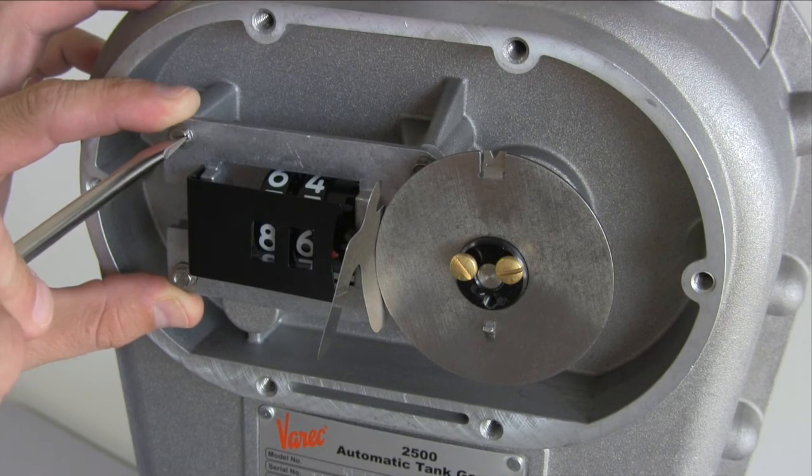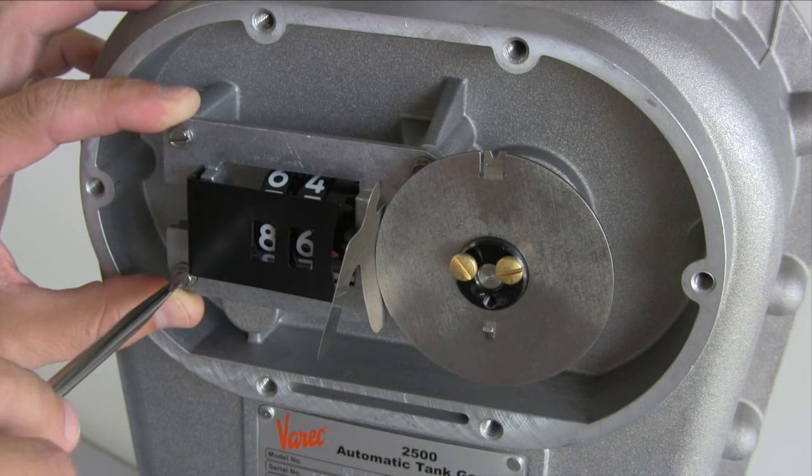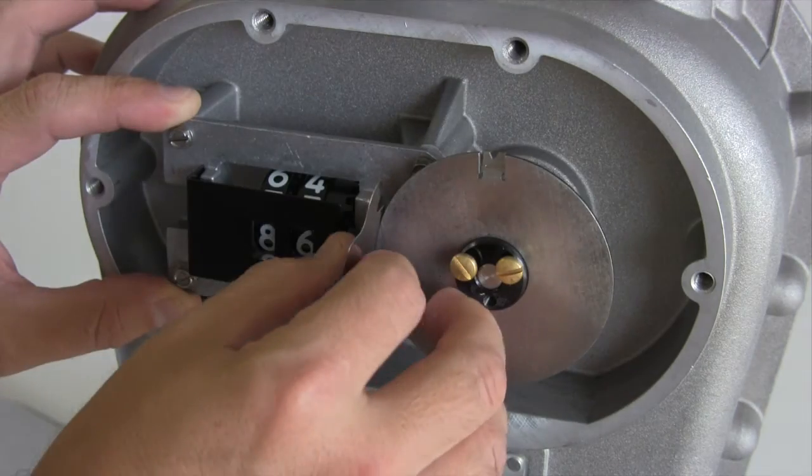Now tighten the two accessible screws being careful not to shift the assembly. Remove the shim and dial gear and then tighten the last screw.